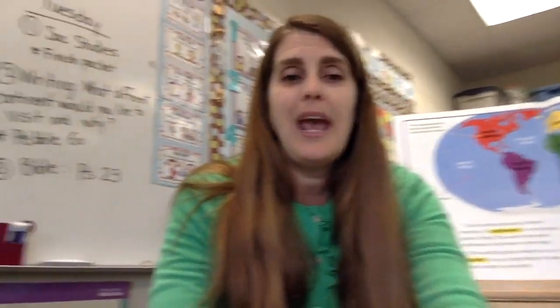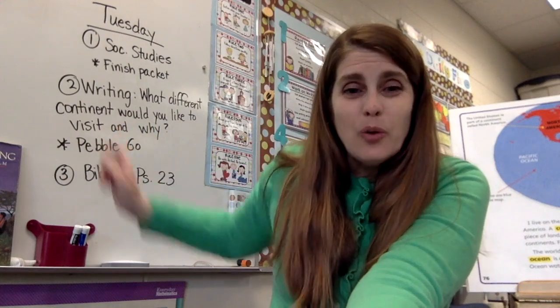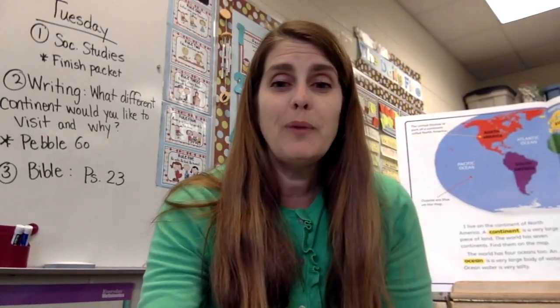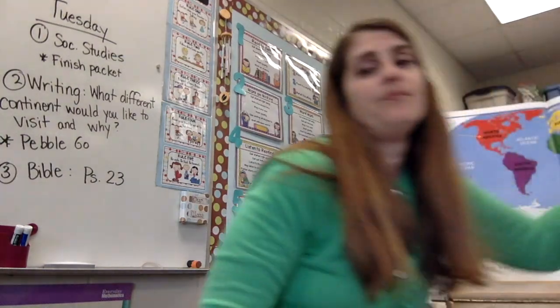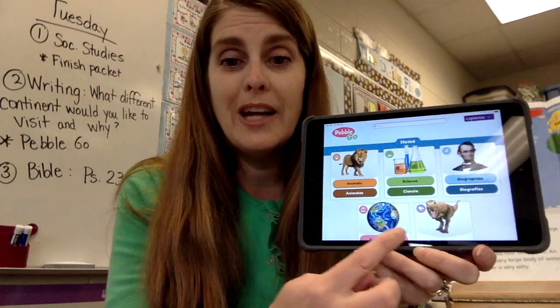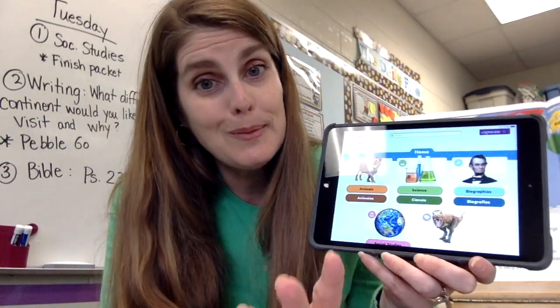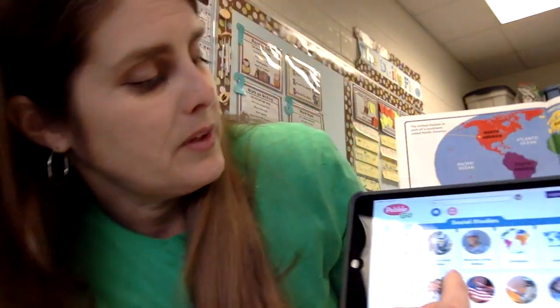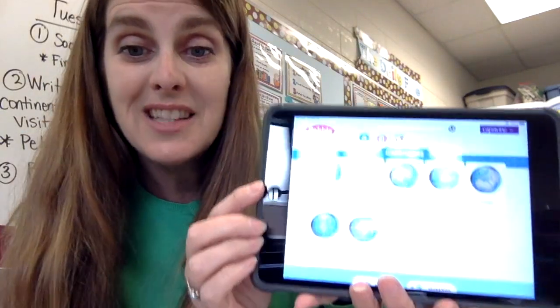Our writing is going to go along with this topic of continents today. Your writing question is: what different continent would you like to visit and why? Before you make your decision, we'd like you to go on PebbleGo. If you go to PebbleGo, I did notice they put a new dinosaur one on there — you can check that out sometime when your parents say okay. But for now, we're going to go to Social Studies. Click on that. It'll be the second one — it has a world globe and says continents, and it has them in different colors. We have seven continents, and it lists all seven. North America is where we live, so you can look at that one, but you can't pick it because that's where we already live. So you've got to pick a different continent.